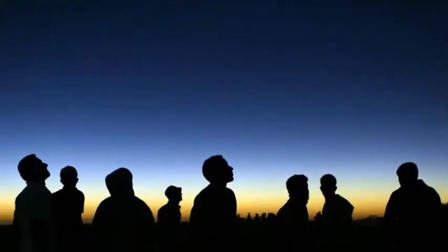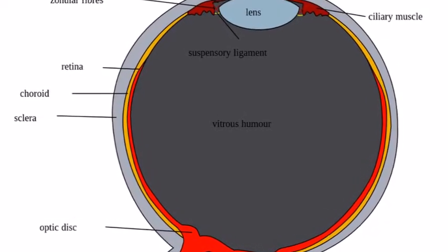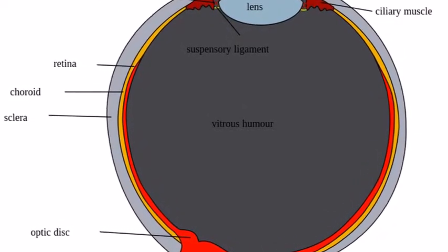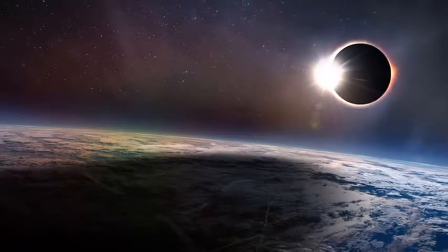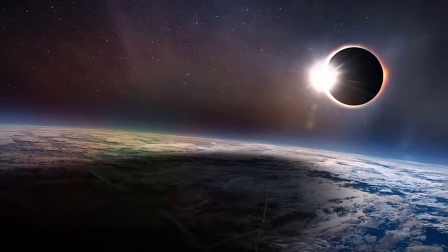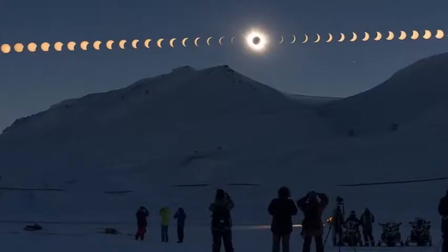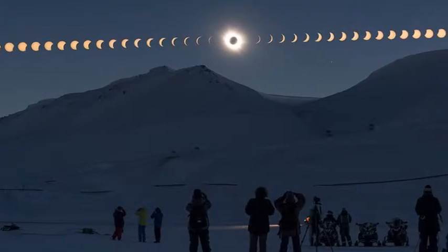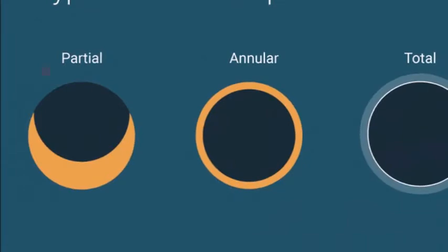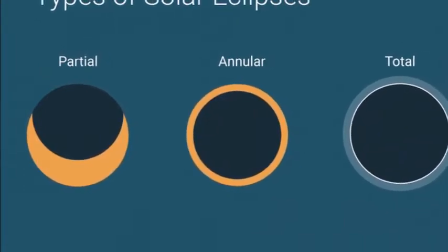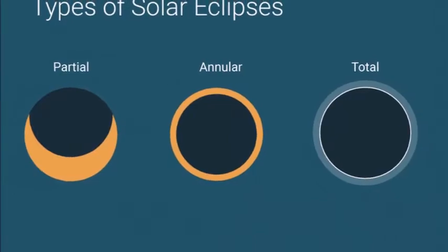Or put on a pair of certified disposable eclipse glasses. The American Astronomical Society points out there are five manufacturers that meet international standards for eclipse eye protection. When you get glasses, here's the number one thing to look for. Make sure the glasses are certified by the International Organization for Standardization. The glasses should mark that they meet ISO 12312-2 safety standards, like so.